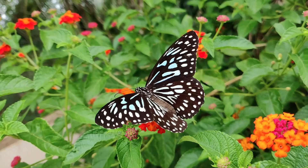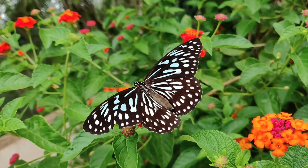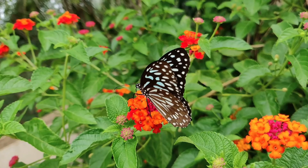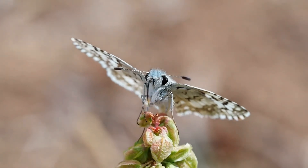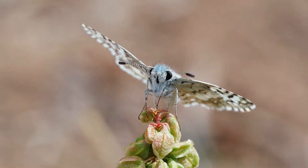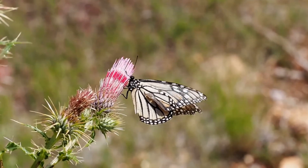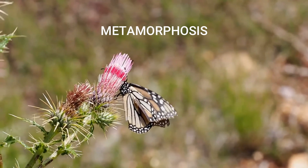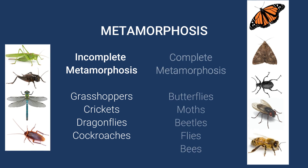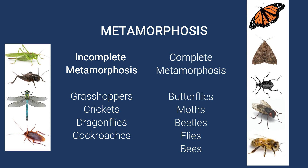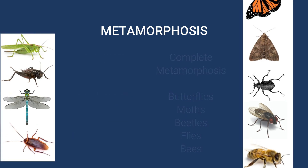The butterfly and moth develop through a process called metamorphosis, a Greek word that means transformation or change in shape. Insects have two common types of metamorphosis. Grasshoppers, crickets, dragonflies, and cockroaches have incomplete metamorphosis. The young, called a nymph, usually look like small adults but without wings. Butterflies, moths, beetles, flies, and bees have complete metamorphosis.